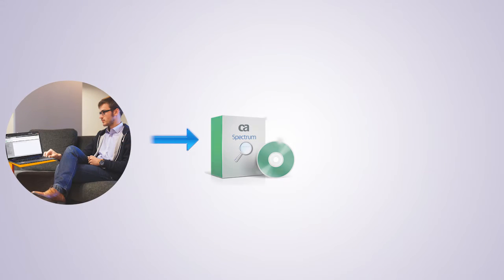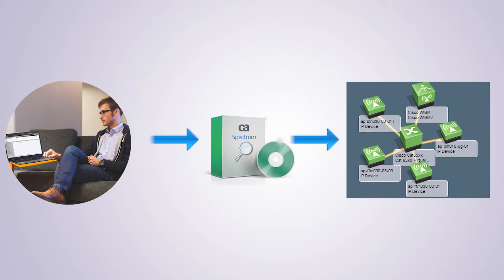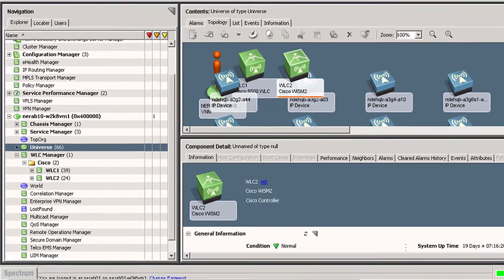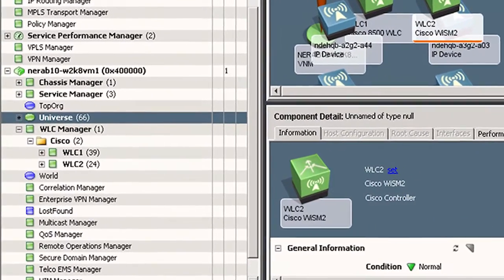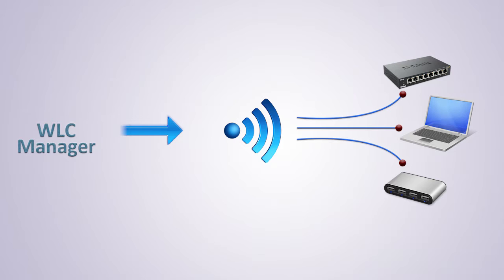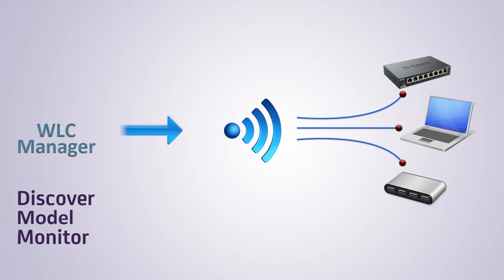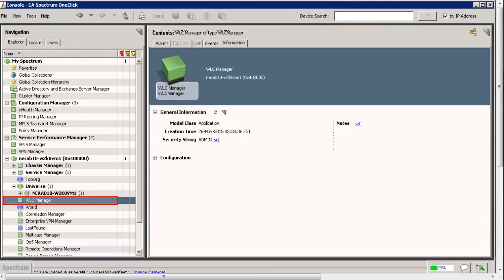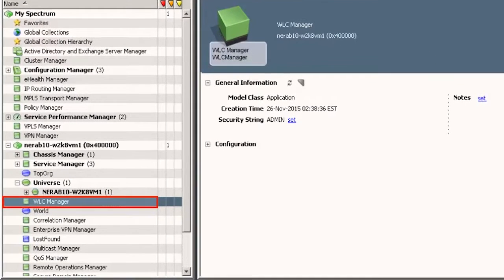The administrators can use CA Spectrum to view the complete wireless network topology. For easy identification, all the wireless devices discovered are modeled and listed under WLC Manager. WLC Manager will discover, model, and monitor the wireless controllers and access points. This video describes the advantages of the wireless feature in CA Spectrum.